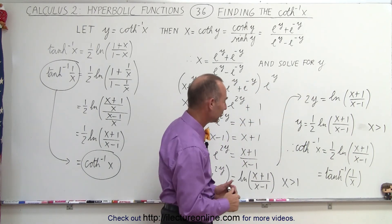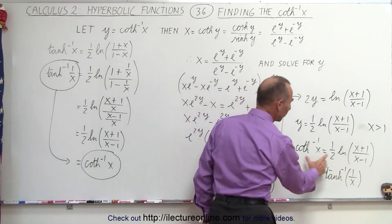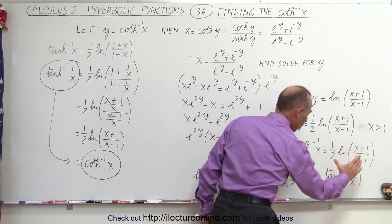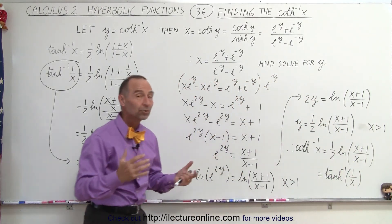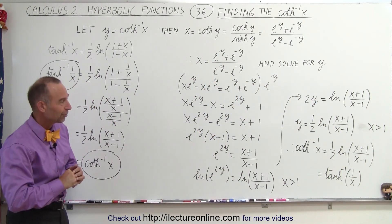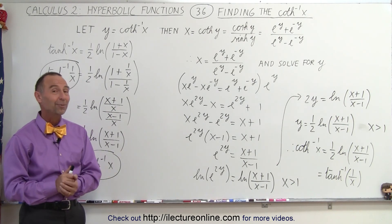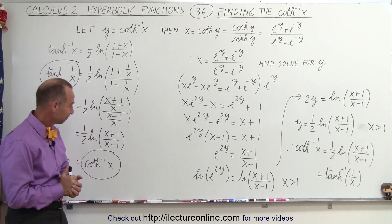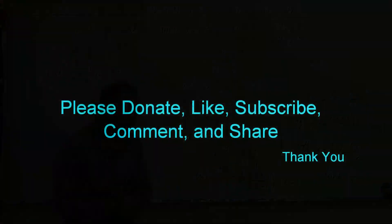So sometimes we express the inverse hyperbolic cotangent of x in terms of the inverse hyperbolic tangent of 1 over x — boy, that's quite a tongue twister! And so we need to write it like this, or we can write it like this. Both are the same thing as the inverse hyperbolic cotangent of x. And that's how we do that. Thank you.